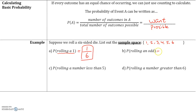Let's look at the probability of rolling an odd number. How many odd numbers do we have? We have three odd numbers: 1, 3, and 5. The number of outcomes in event A is three, and the total number of possible outcomes is six. Every fraction needs to be reduced, so the probability of rolling an odd is one half, which makes sense because half the numbers are odd and half are even.